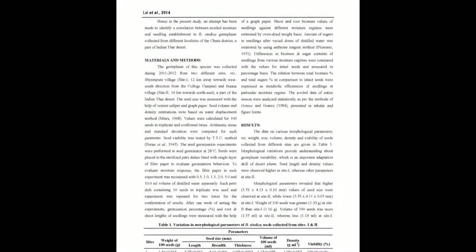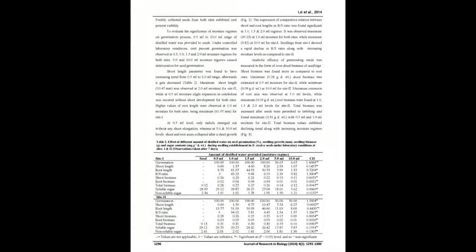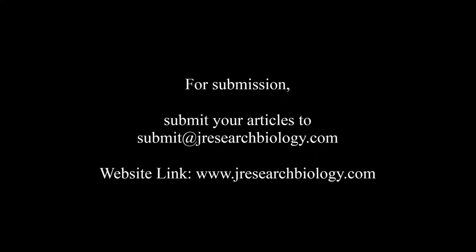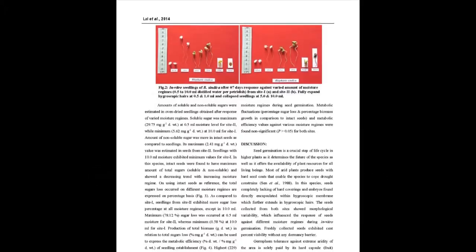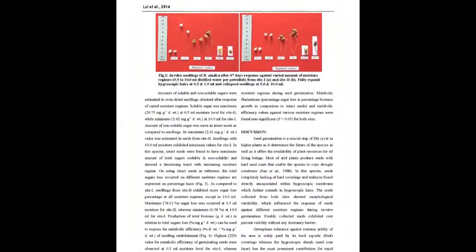Occurrence of seed co-layers as sheaths of hygroscopic hairs is a sign of its extreme capabilities to initiate life under lesser soil moisture availabilities in desert. Seeds with 0.5 to 1.0 milliliters distilled water were observed most suitable for the production of maximum shoot and root lengths under controlled conditions. Maximum biomass of shoot and root modules were observed in 0.5 milliliters distilled water.